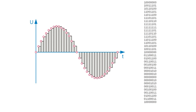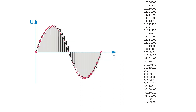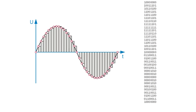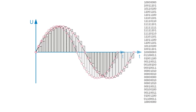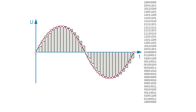But regardless of how small these steps are, we still only get an approximation of the original. Reconstruction filters will try to make the output as close to the original signal as possible. Furthermore, it is important that the sender and receiver are in the same rhythm. If the digital-to-analog converter is too fast, the curve is compressed and the pitch goes up. If it is too slow, the curve is stretched and all tones sound deeper.